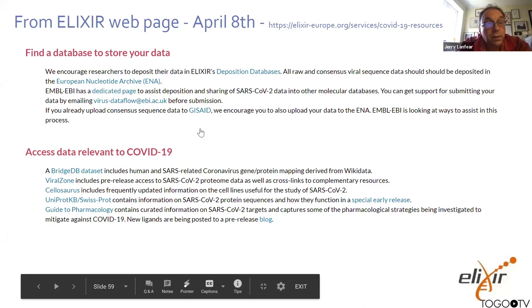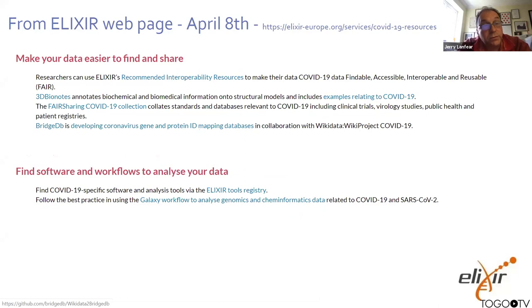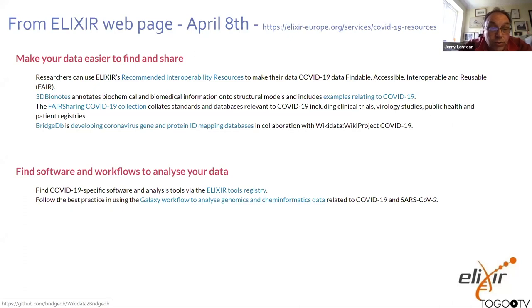To make your data easier to find and share, there are the recommended interoperability resources. The RIRs are the interoperability equivalent of the CDRs — the idea is that they make data FAIR. For example, 3D-Beacons annotates biochemical and biomedical information onto structural models. The FAIRsharing database is curating a COVID-19 collection of standards and databases relevant to COVID-19. The bio.tools ELIXIR tools registry is curating and flagging software around COVID-19, and Galaxy workflows for analysis of genomics and chemical data are also highlighted.